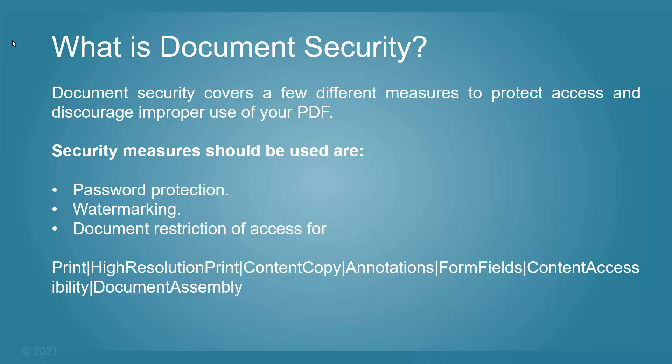Let's consider some measures that can be used to protect the PDF document and discourage improper use. The first option is to password protect it. Secondly, add a watermark to it. Third and most important: apply restrictions such as disable printing, disable high-resolution printing, or even disable content copying or document assembly. Once you have added these restrictions, you can say that you have a secure document.